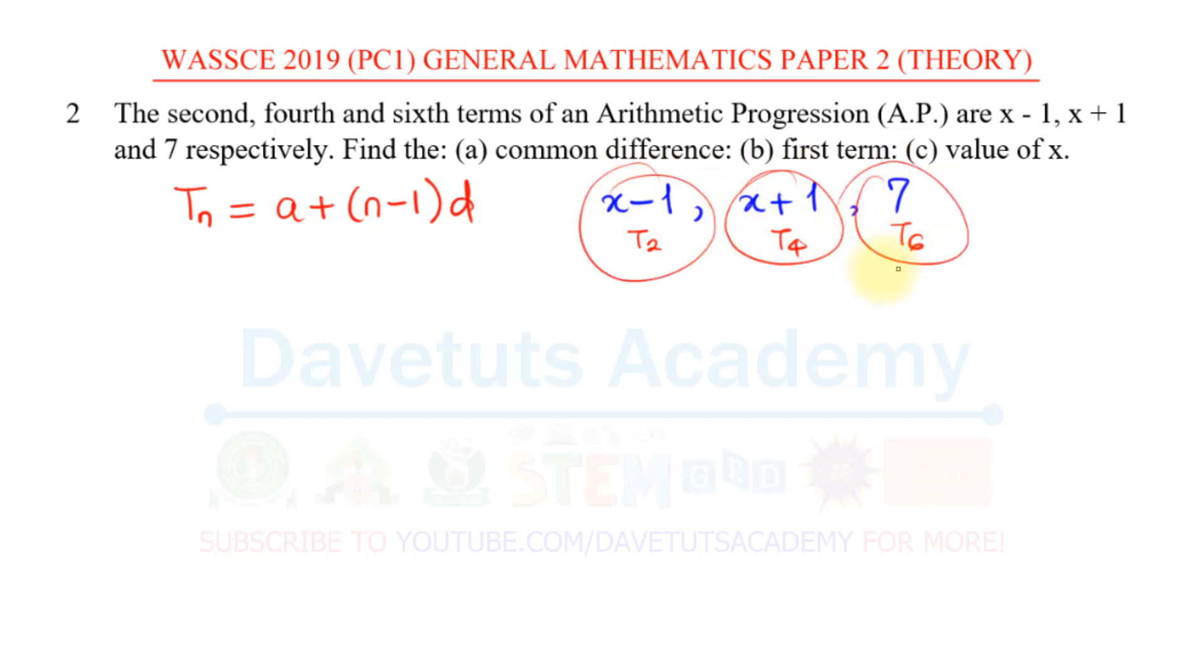Having this information here, we can look at this formula and see how we can use this given information to find what was asked. Let's consider the 2nd term T2, which we are given to be x-1. We know that will be equal to a + n, n is 2, so that will be 2-1 multiplied by d.